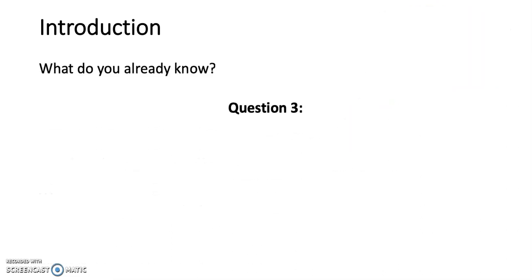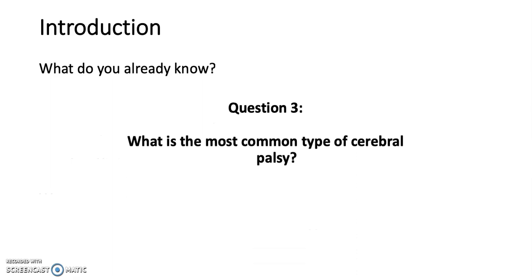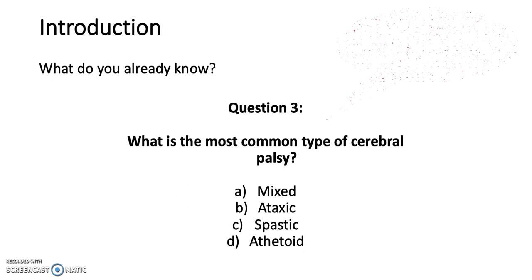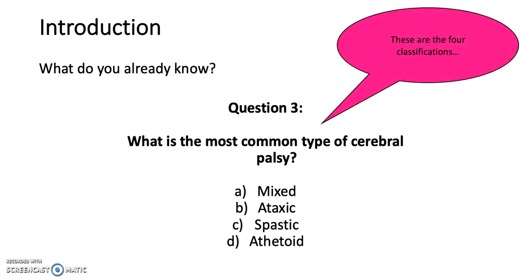Question three: What is the most common type of cerebral palsy? Is it A. Mixed, B. Ataxic, C. Spastic, or D. Athetoid? The answer is C. Spastic.